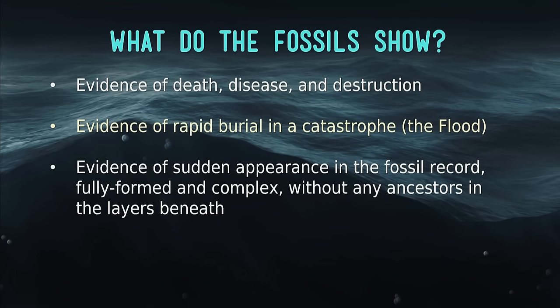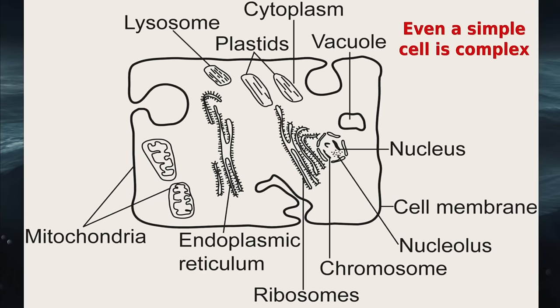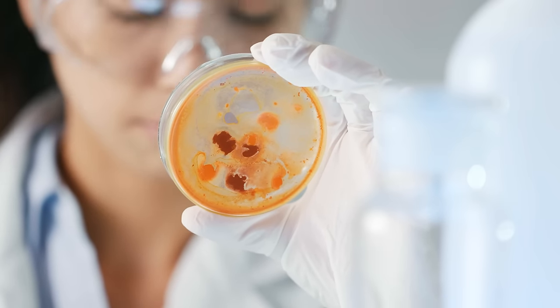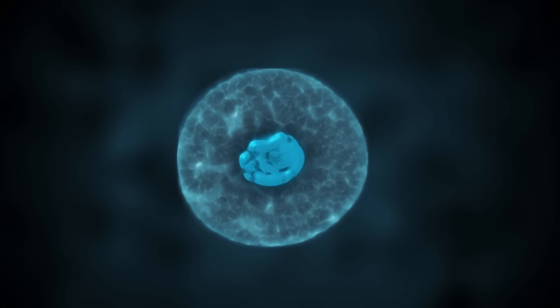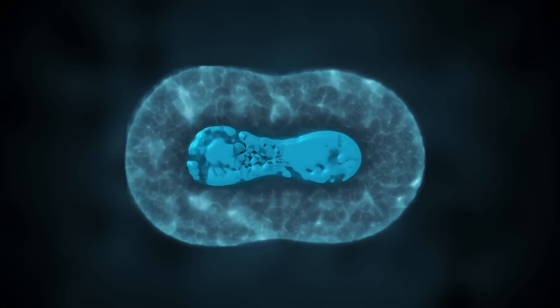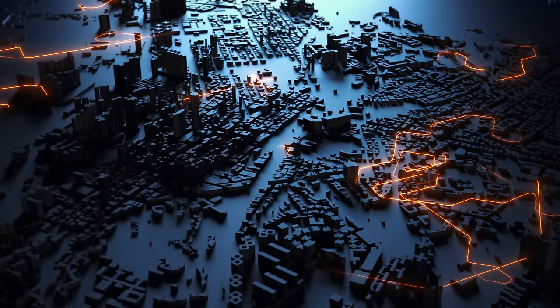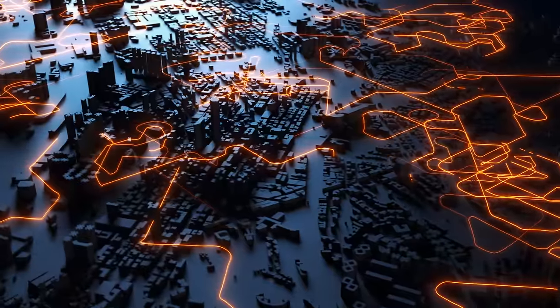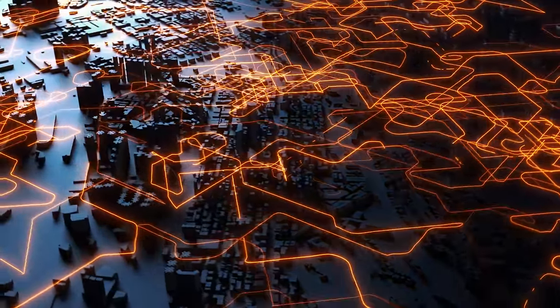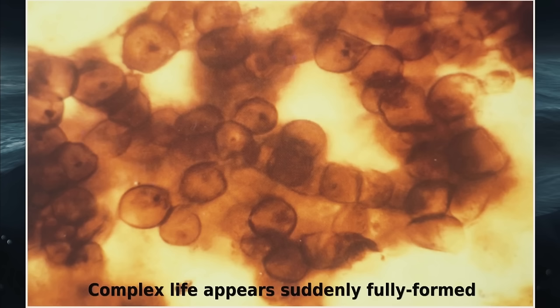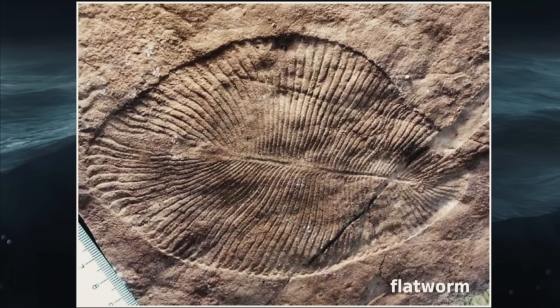The fossils also show evidence of sudden appearance — fully formed and complex, without any ancestors in the layers beneath them. Even a simple cell is complex; any microbiologist will tell you a cell you can fit on the size of a pin point is incredibly complex. One biologist said the cell is as complex as a city the size of New York or London — it has a control center or nucleus, transport networks, factories, and powerhouses. In the fossil record we go from life to complex life — cells fully formed and fully functioning.